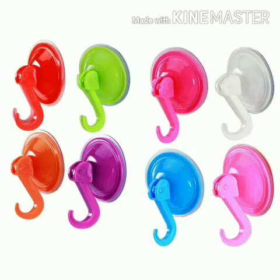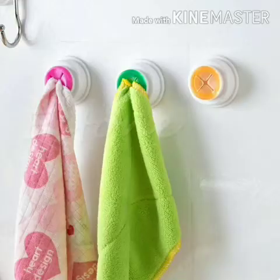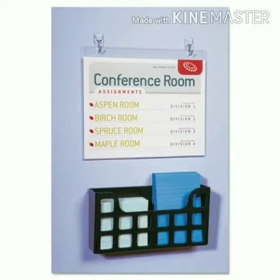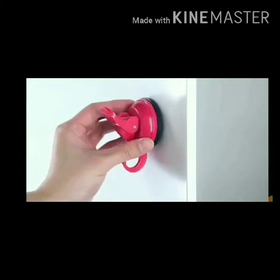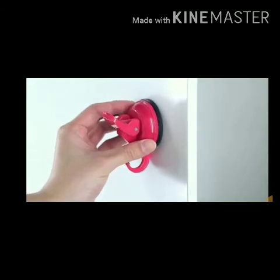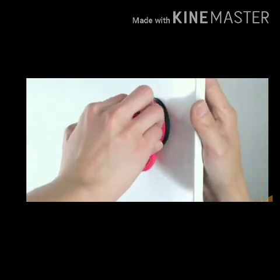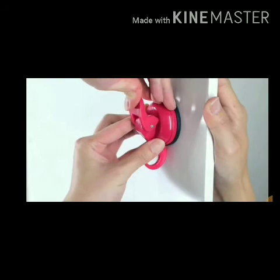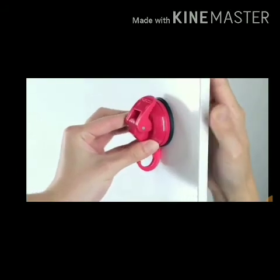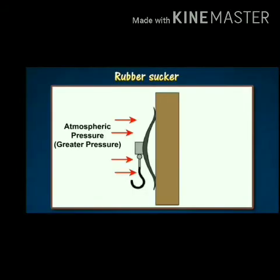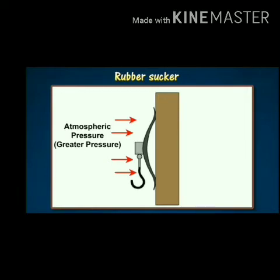Third is the rubber suction pad. Rubber suction pads are used on walls to hang clothes and calendars. When a rubber suction pad is pressed against a smooth plain surface, the air between the suction pad and the wall is forced out, reducing the pressure inside. The outer atmospheric pressure, being greater, pushes the suction pad strongly and it adheres to the surface of the wall.